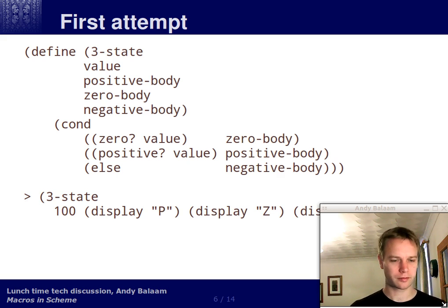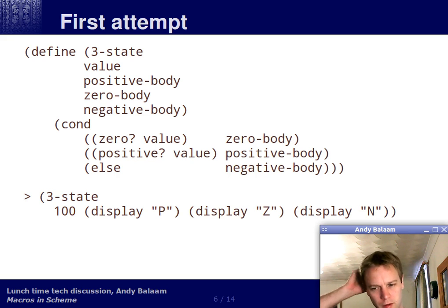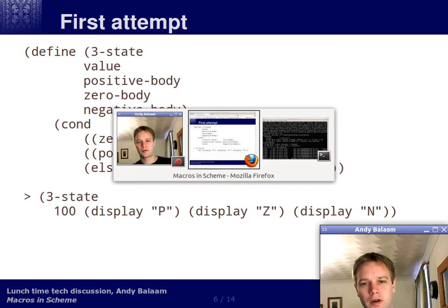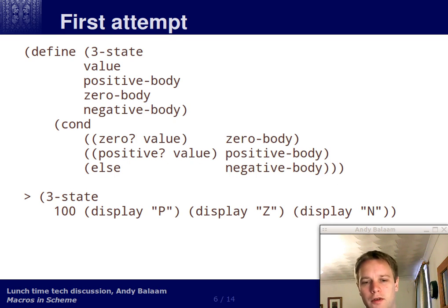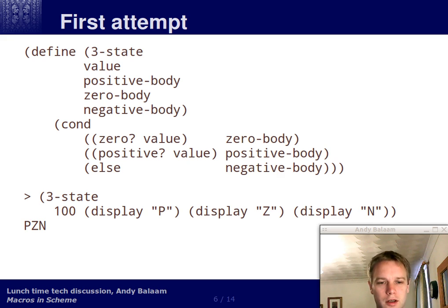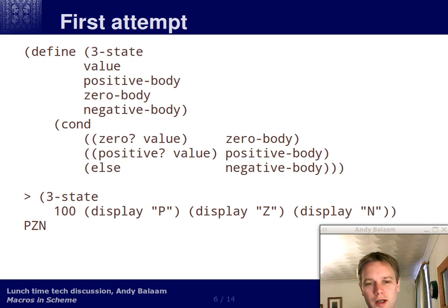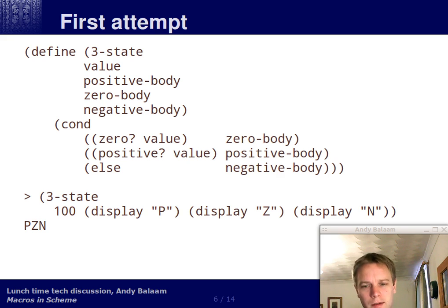Let's call this function with an argument of 100 and then three more arguments — the things we want to do depending on whether the first argument is positive, zero, or negative. What we want to happen is that it will print out P because 100 is positive. What actually happens is that it prints out PZN. The reason is that it actually runs those three commands before it even calls the three-state function — it evaluates all the arguments first. Those three arguments evaluate and print something during their evaluation, and then a null return value gets passed into the function. So the function is useless here.